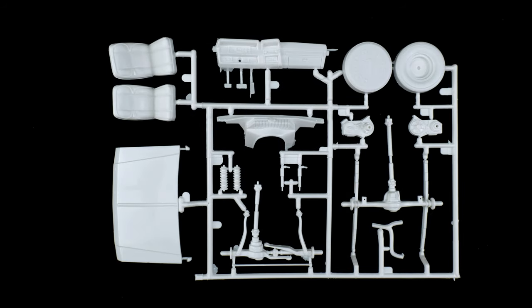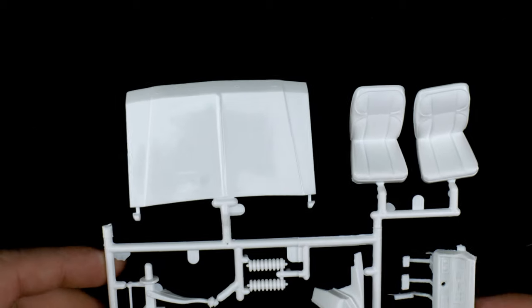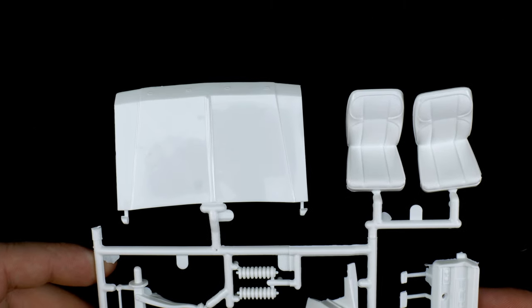Moving on now to the next parts tree, this one has some suspension pieces, some interior pieces, body pieces. Here we have the hood and the front seats.